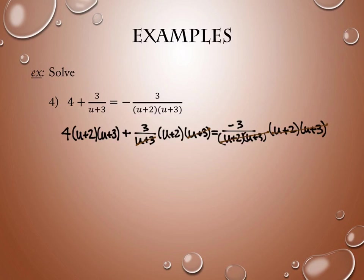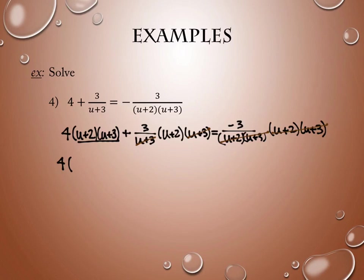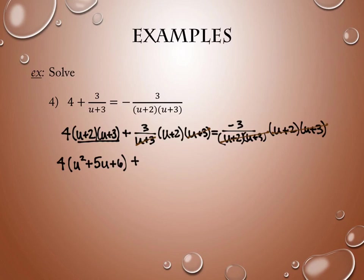On the right-hand side the entire denominator cancels. In the middle the U plus 3 cancels. At the beginning there's no canceling — we just multiply it out. I think it's easier to multiply the two binomials (U plus 2)(U plus 3) together first, then multiply by 4, to keep numbers smaller. Multiplying out (U plus 2)(U plus 3) and combining like terms gives U squared plus 5U plus 6. In the middle I multiply the 3 through to get 3U plus 6. On the right I have negative 3.